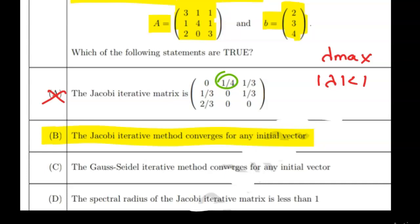The spectral radius of the Jacobi iterative matrix is less than 1, so option D is directly correct.